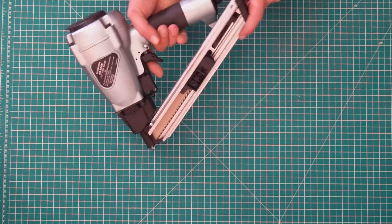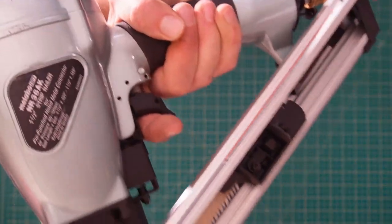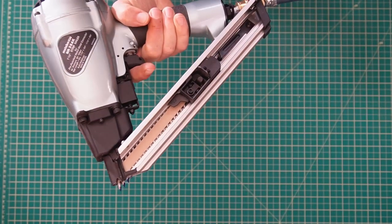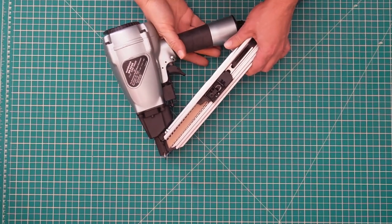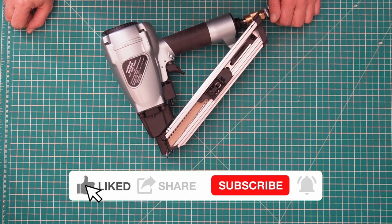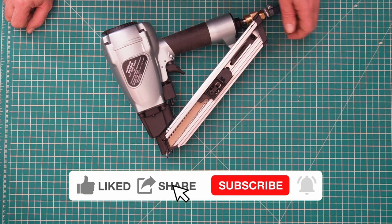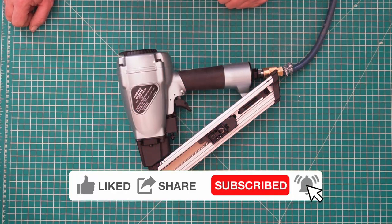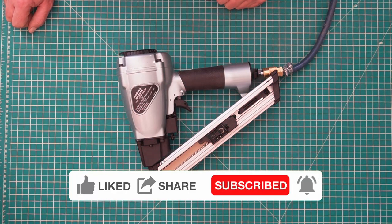Hey there Toolaholics. Today we get a review of the Metabo HPT Metal Connector Nailer. Generally what we call these is a strap shot because of the Bostitch strap shot. I'm definitely going to be comparing it to that one and let's see how it stacks out.